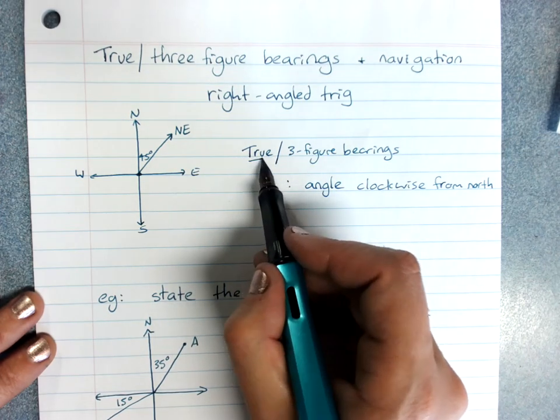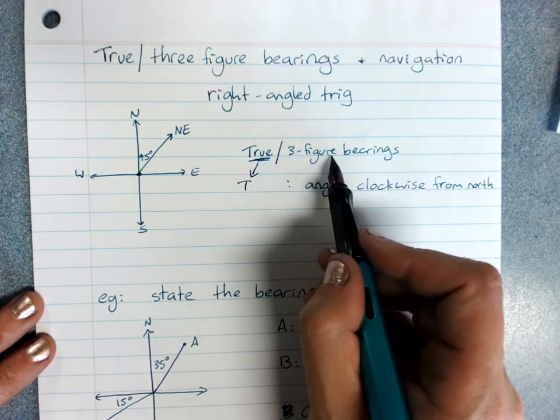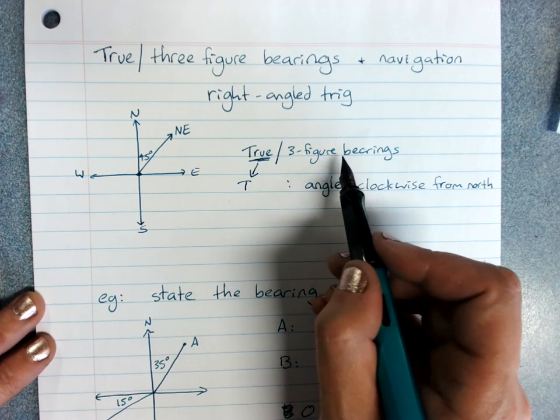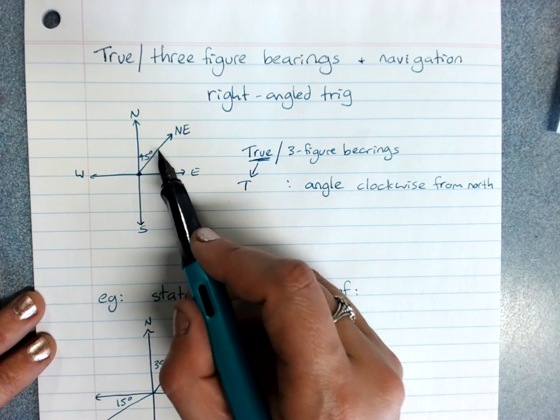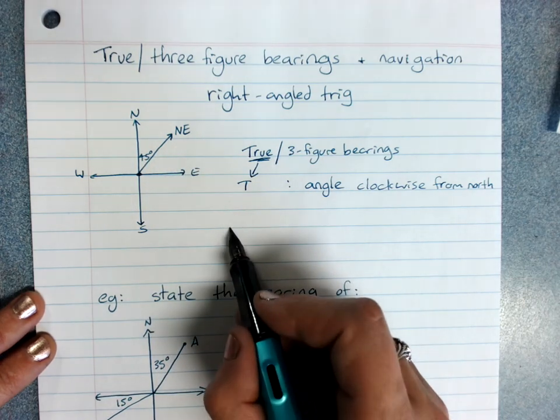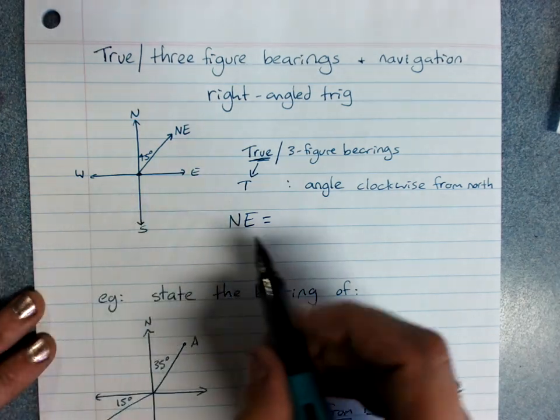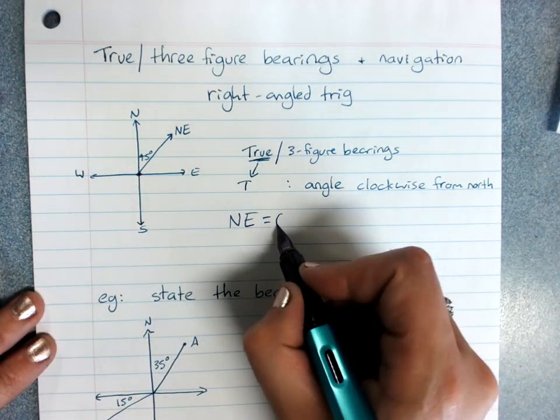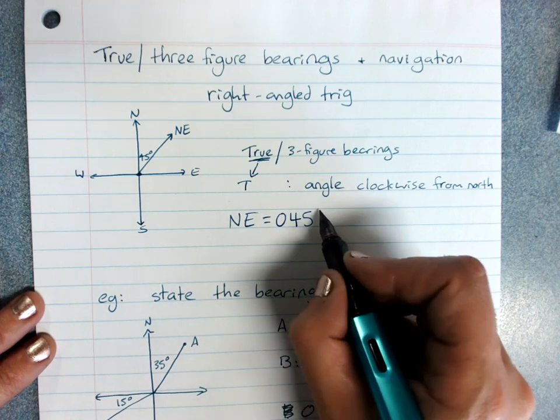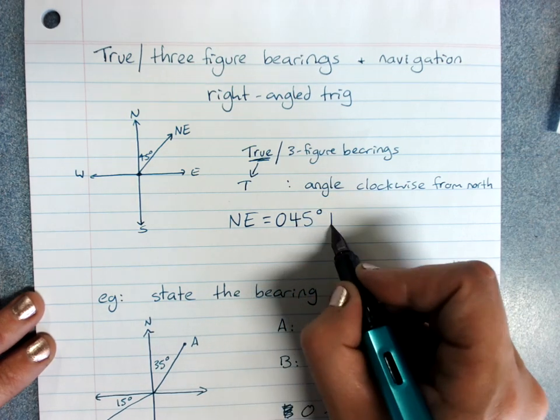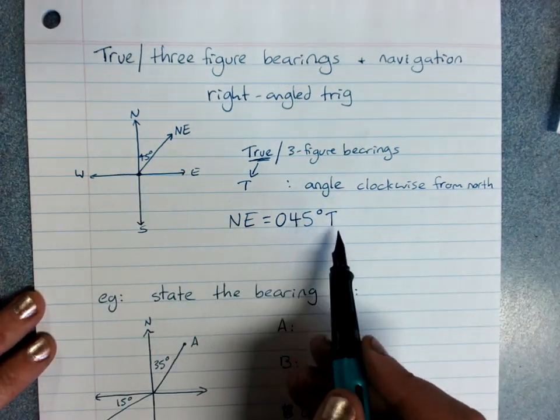Now, the true bearing is shown as a T after it. Three figure bearings are called that because we give our number as three digits. Now, this angle here clockwise from north is only 45. So let's start with north-east. As a true bearing, because it's only 45, we'd start with a zero to make it up to three digits without changing its meaning. And degrees T for true. So north-east is 045 degrees true.